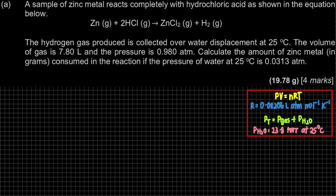Besides that, you have to know that if the question asks about the water displacement method, we use the formula: P_total = P_gas + P_H₂O. If the temperature is 25 degrees Celsius, the vapor pressure of water is 23.8 torr. This information — the vapor pressure — is available on your list of constants.